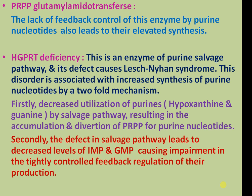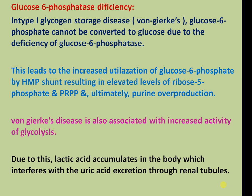Secondly, the defect in the salvage pathway leads to decreased levels of inosine monophosphate and guanine monophosphate, causing impairment of the tightly controlled feedback regulation, leading to their overproduction. Glucose 6-phosphatase deficiency, a type of glycogen storage disease known as Von Gierke's disease, results in glucose 6-phosphate being unable to be converted to glucose. This leads to increased utilization of glucose 6-phosphate via the HMP pathway, resulting in elevated levels of ribose 5-phosphate and PRPP, ultimately leading to purine overproduction.